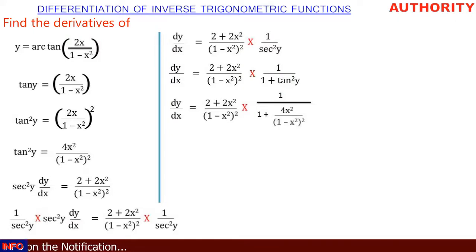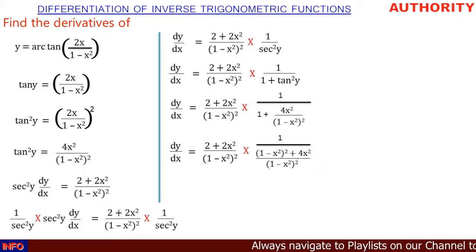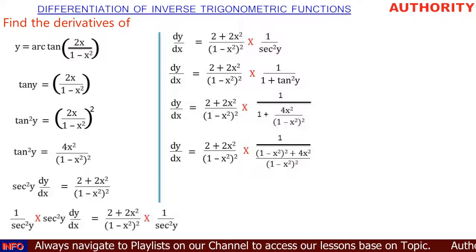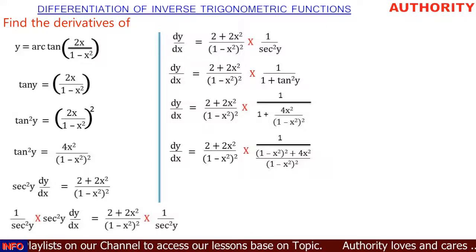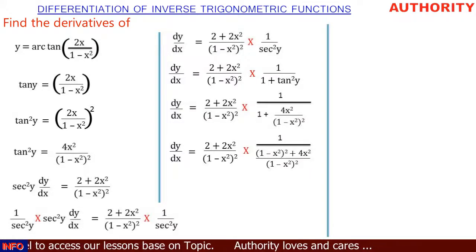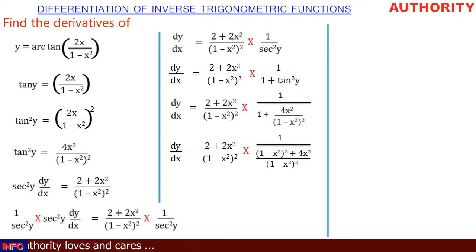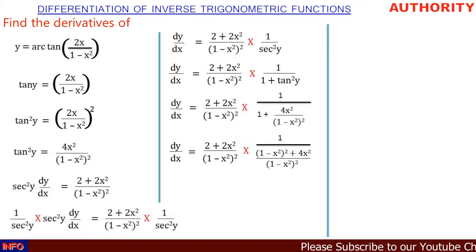In this last expression we can combine the denominator. We find the LCM, which is (1 minus x squared) squared. Dividing 1 by 1 gives (1 minus x squared) squared, and then we have plus 4x squared, all over (1 minus x squared) squared. So dy/dx equals 2 plus 2x squared all over (1 minus x squared) squared, times 1 all over (1 minus x squared) squared plus 4x squared, all over (1 minus x squared) squared.